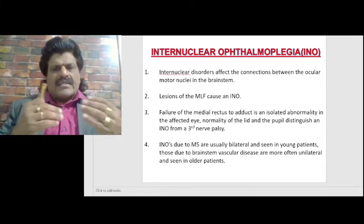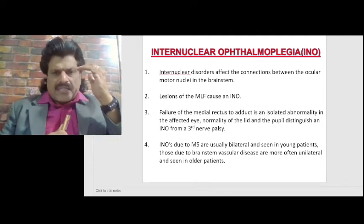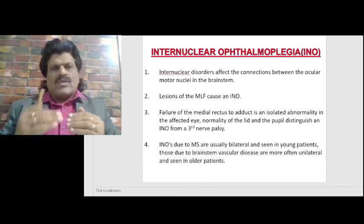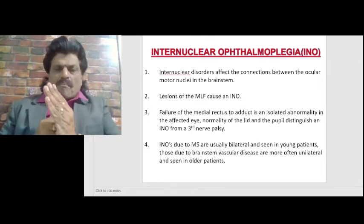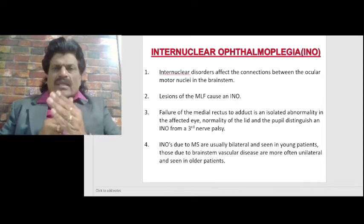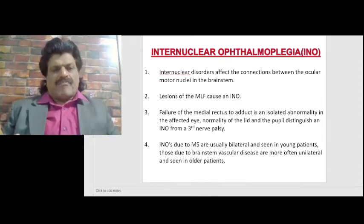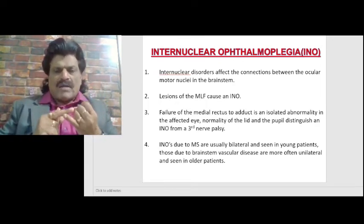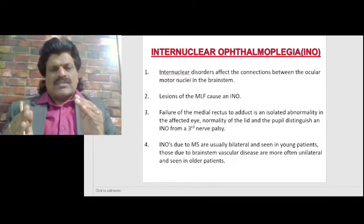This failure of adduction is an isolated abnormality in the affected eye. Normality of the lid and the pupil distinguishes an INO from a third nerve palsy. Third nerve palsy can also cause medial rectus weakness, but in INO there is normality of the lid and the pupil, which is the key differentiating feature.